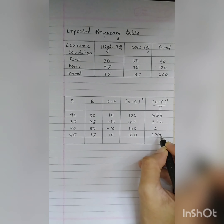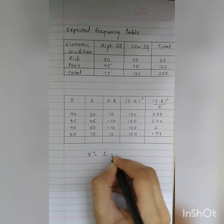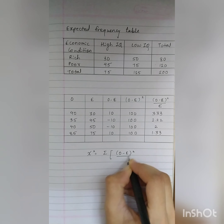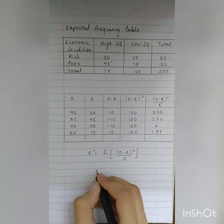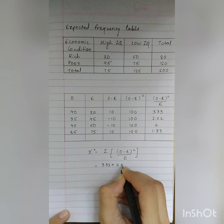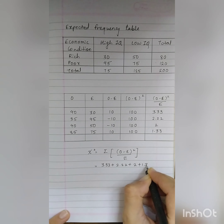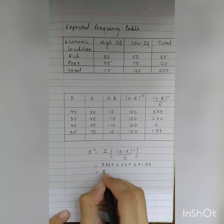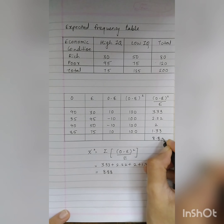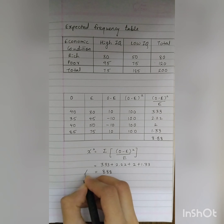As per the formula, chi-square equals summation of (O minus E) squared divided by E, which equals 3.33 plus 2.22 plus 2 plus 1.33, which equals 8.88. So the calculated chi-square value is 8.88.